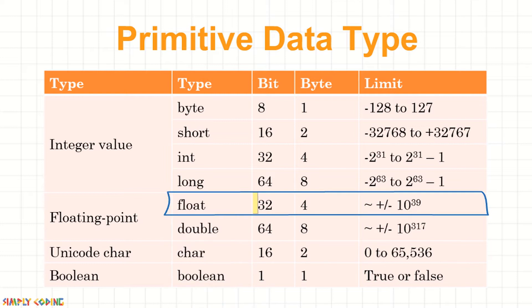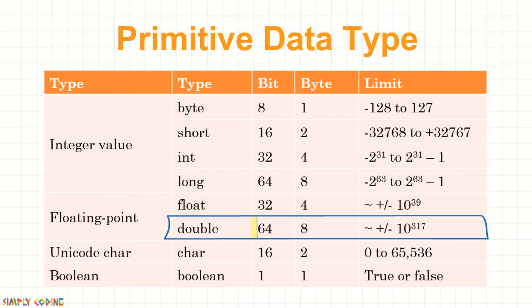Float has 32 bits or 4 bytes of storage and has precision of up to 6 digits, meaning 6 digits after decimal point. It is also called single precision floating point. double has 64 bits or 8 bytes and has precision of up to 15 digits, so it is also called double precision floating point.